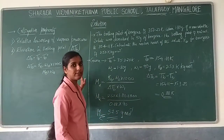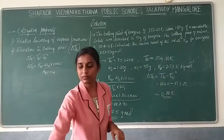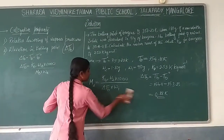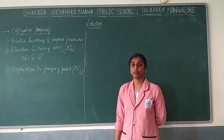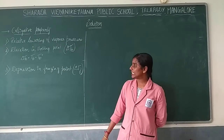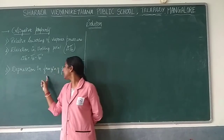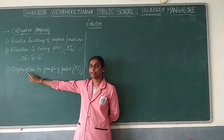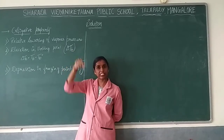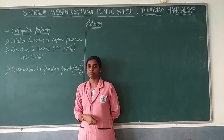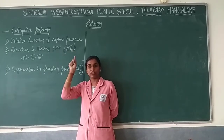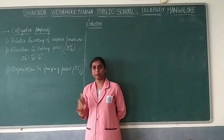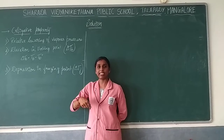The next colligative property is depression in freezing point — the third colligative property. It is called depression because the temperature decreases when going with the freezing point. The temperature should decrease — it should be less — so we call it depression in freezing point.